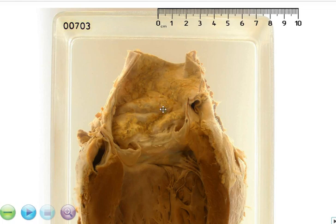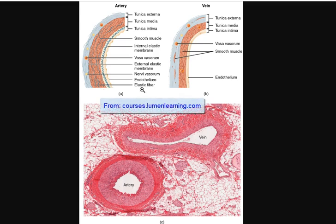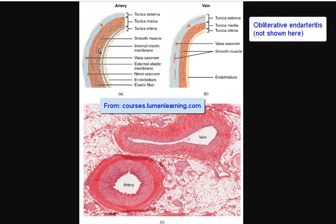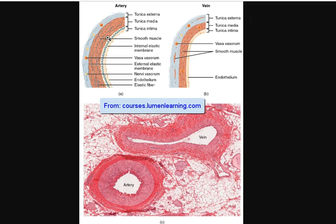Syphilis actually affects the vasa vasorum of the vessel. Here is just a diagram of an artery, and we can see that the vasa vasorum is located in the adventitial layer. The vasa vasorum actually supplies blood to the wall of the vessel. So when this is damaged in syphilis, because there is a lot of chronic inflammation — lymphoplasmacytic inflammation — and as a result, you get this obliterative endarteritis. There is damage to the elastic tissue within the tunica media as well as the smooth muscle cells.